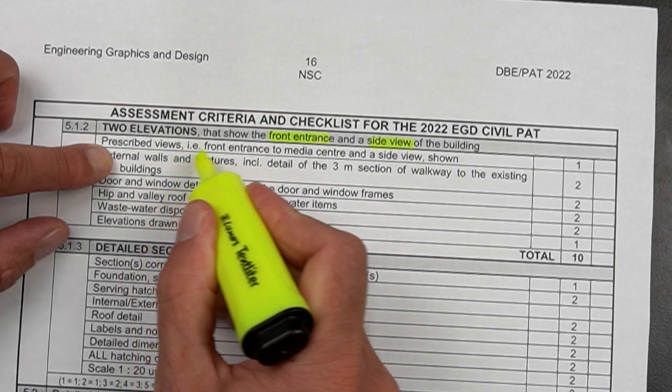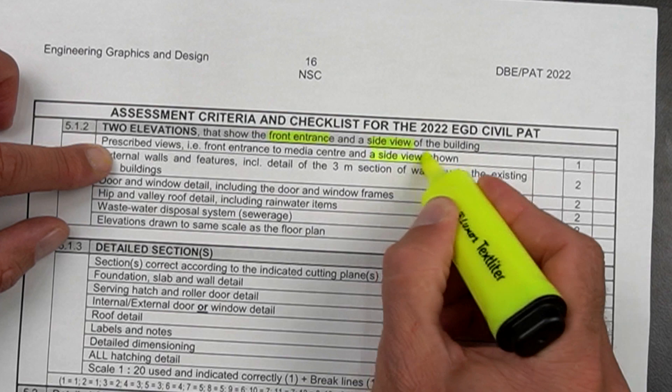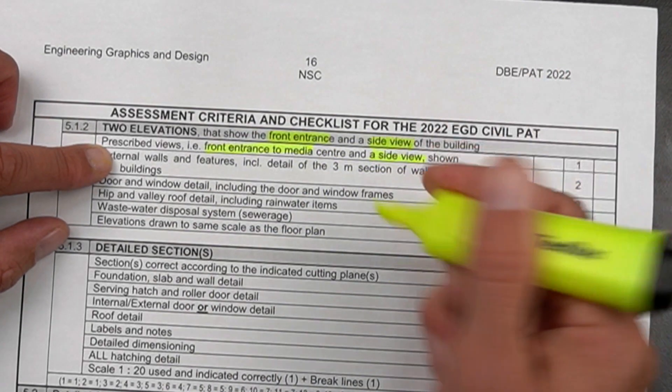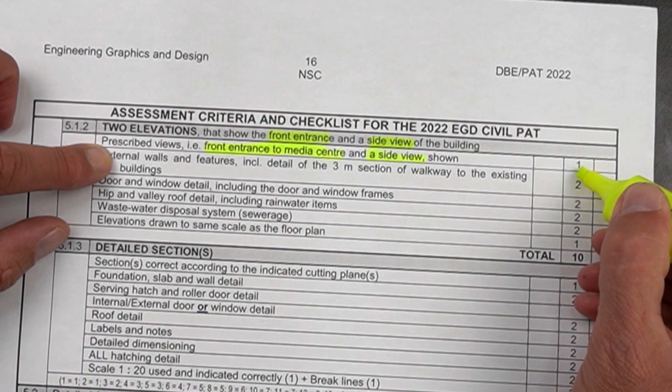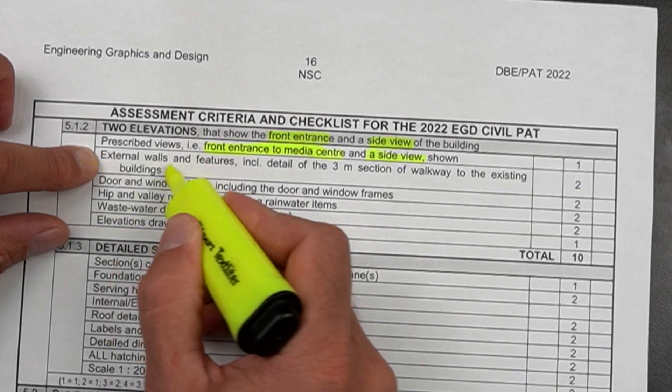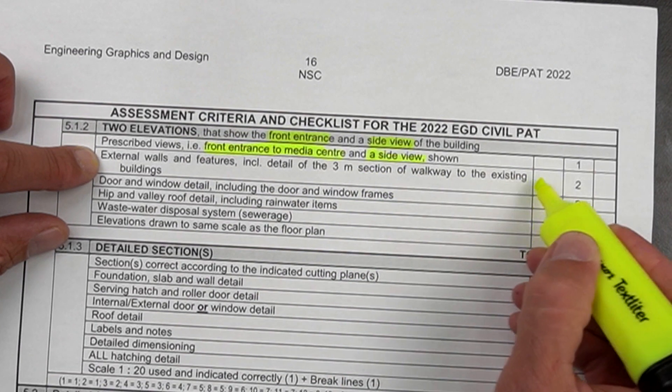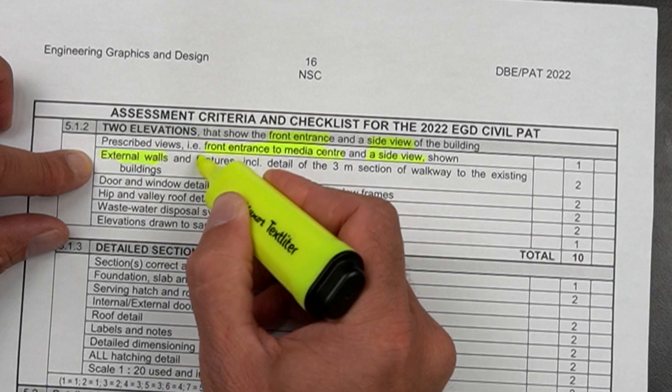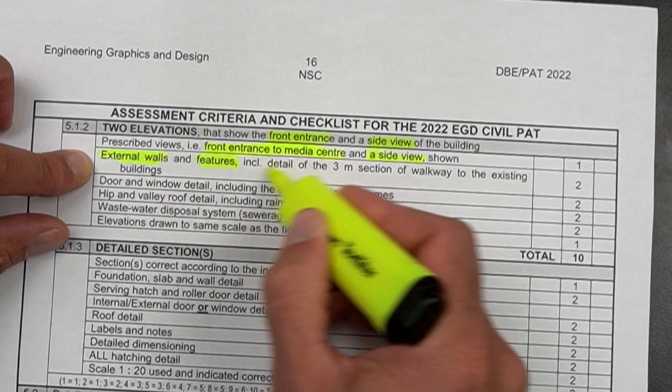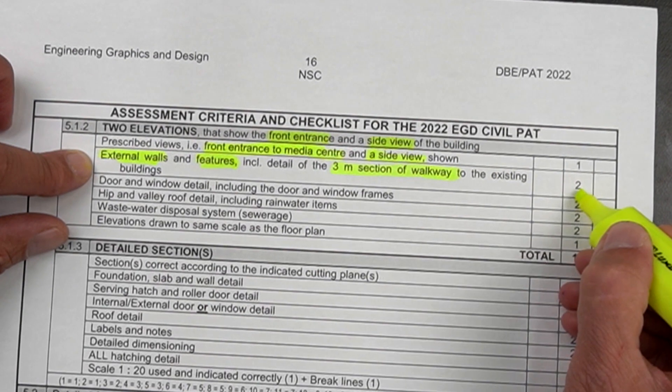The prescribed views, for example, the front entrance to the media and side view, have you drawn it? Have you drawn those two views? Two elevations, one front entrance and one side view. If you've done it, you're going to get one mark. External walls and features including detail of the three meter section of the walkway to the existing building. In other words, are the external walls all shown, external features shown, and did you include the three meter section of the walkway? If you've done that, two marks.